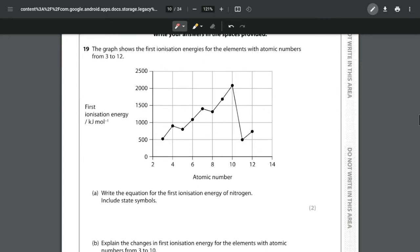Question 19 is looking at ionization energies for elements with atomic number 3 to 12. So we are looking at from lithium right through to magnesium and you can see that we have a trend following here.